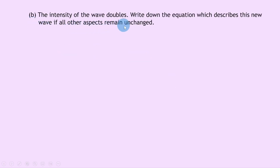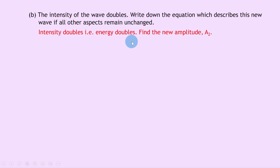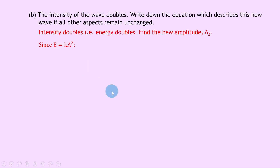Part b says the intensity of the wave doubles. Write down the equation for this new wave if all other aspects remain unchanged. If the intensity doubles, the energy doubles. We need to find the new amplitude A2, because amplitude and energy are related — energy is directly proportional to amplitude squared. Since energy E equals K times A squared, rearranging gives E over A squared equals constant K, so we can form E1 over A1 squared equals E2 over A2 squared.